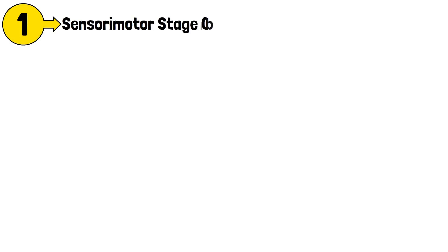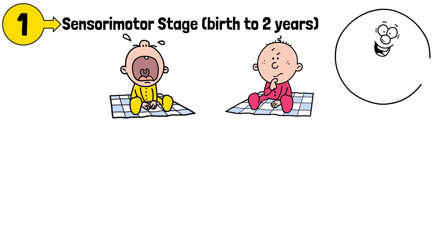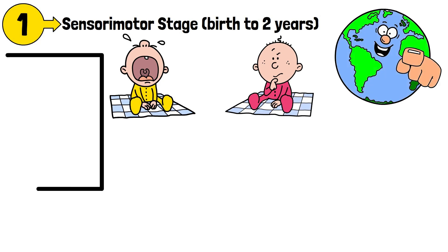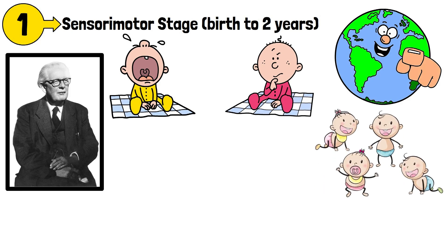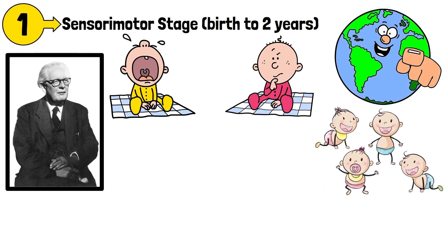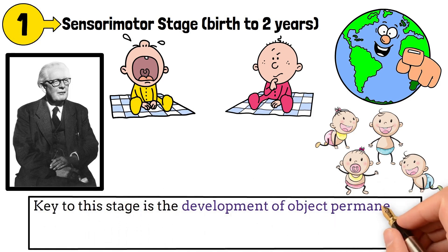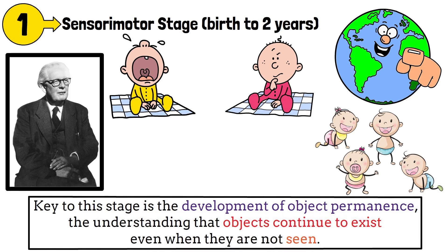Stage 1: the Sensorimotor stage, from birth to two years. In this stage, infants learn about the world through their senses and actions. Piaget proposed that infants begin with reflexive behaviors but soon develop more intentional actions. Key to this stage is the development of object permanence — the understanding that objects continue to exist even when they are not seen.